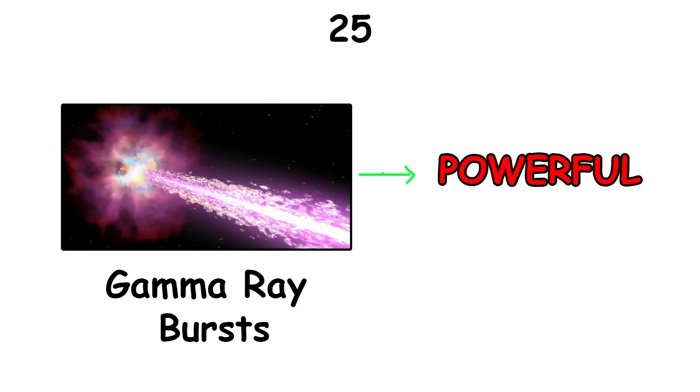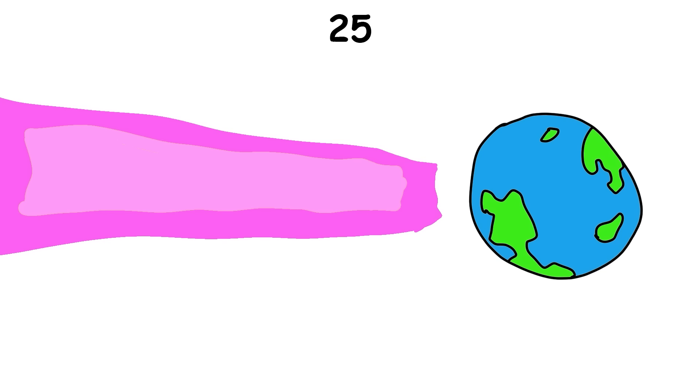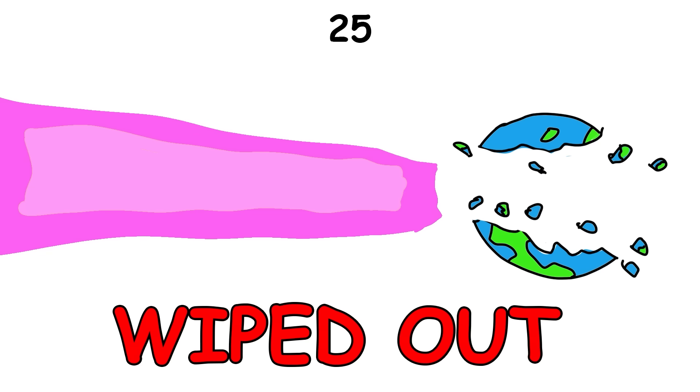Gamma-ray bursts are extremely powerful and bright flashes of very high energy light, being the second most energetic event in the universe after the Big Bang. And in the event one gets emitted towards us, all life on Earth would be wiped out. There is nothing to stop them.